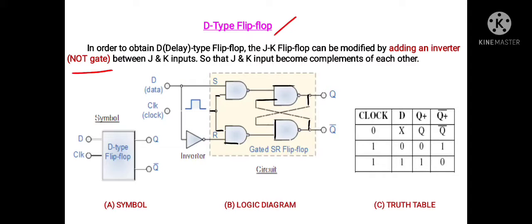The common input is known as the D input, or delay input. As usual, the clock is connected commonly to both NAND gates. At the output, the main output is Q and its complement is Q-bar. In the dotted diagram, this can be considered as a JK flip-flop or clocked SR flip-flop.